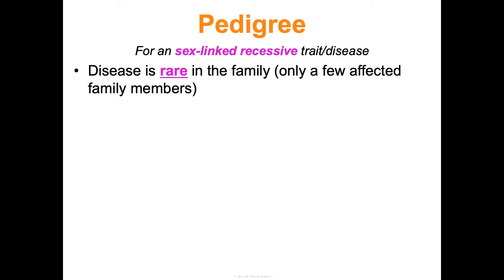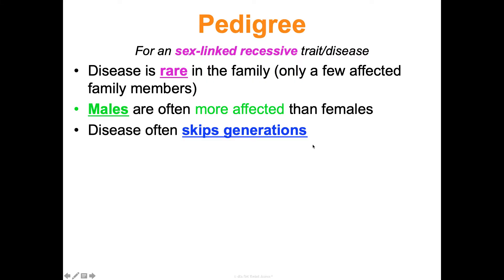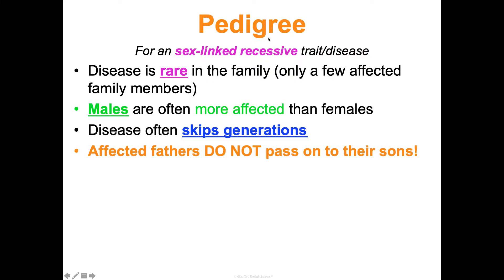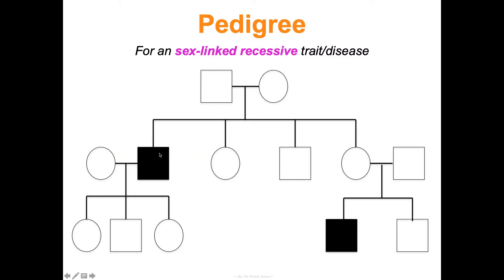Sex-linked recessive diseases are rare, with few family members affected, and males are more affected than females because they only need one affected X chromosome to show a recessive disorder — females need two. The disease often skips generations due to being recessive. Importantly, an affected father cannot pass it to his son, because sons get their Y from dad and their X from mom. Examples include hemophilia, Duchenne muscular dystrophy, and colorblindness.